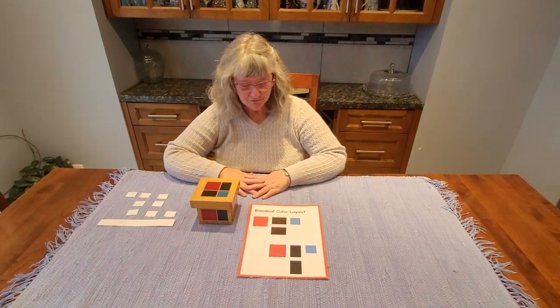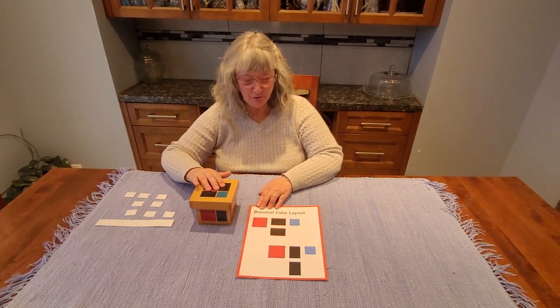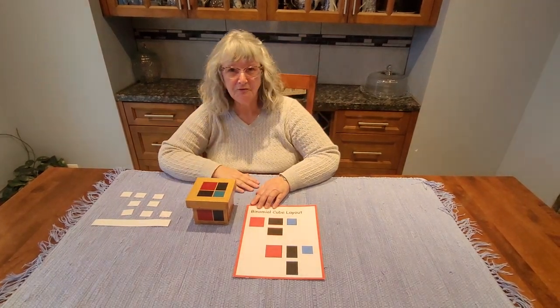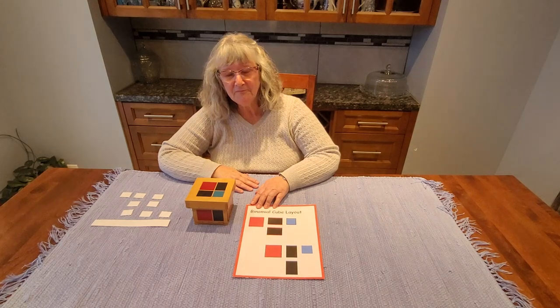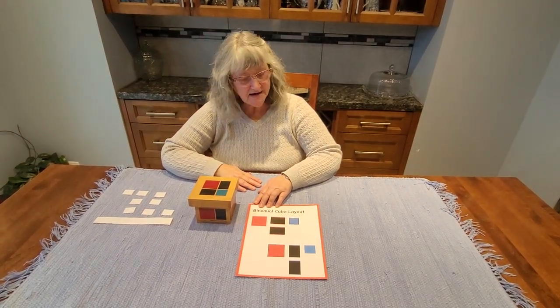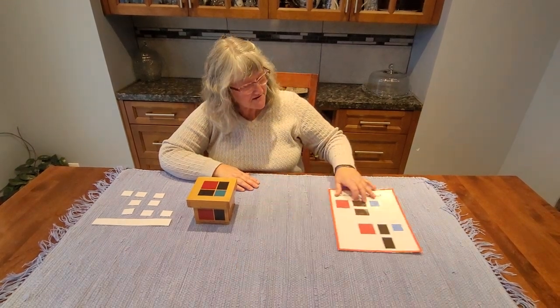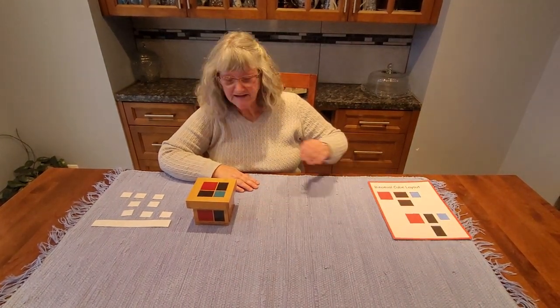Last time I taught you how to remove the parts of the binomial cube and place them on the control of error. You will probably have been working a lot with this material in your classroom, and so today we're not going to use the control of error directly, but we'll put it off to the side just to make sure that we lay it out correctly.